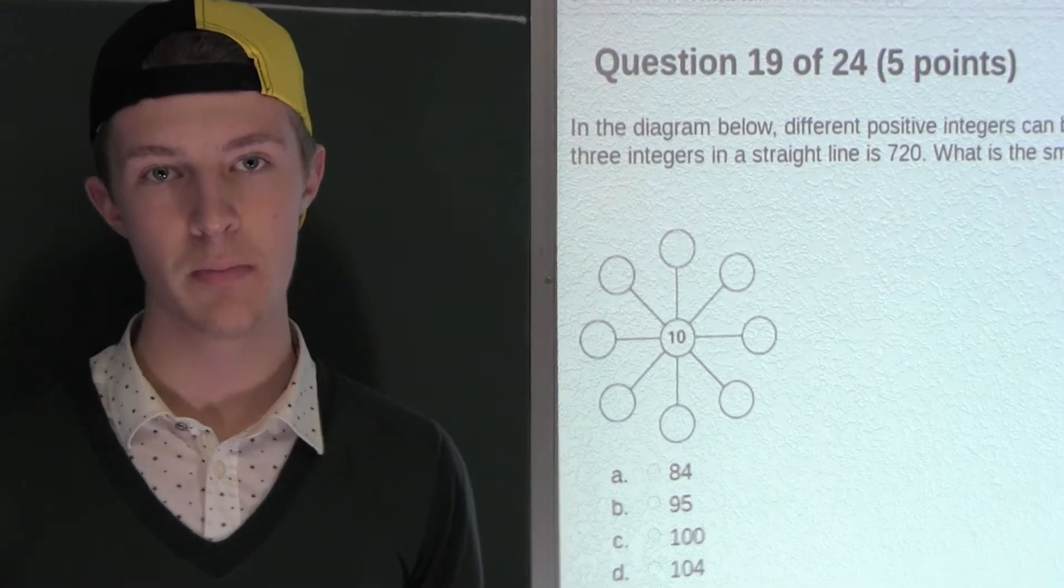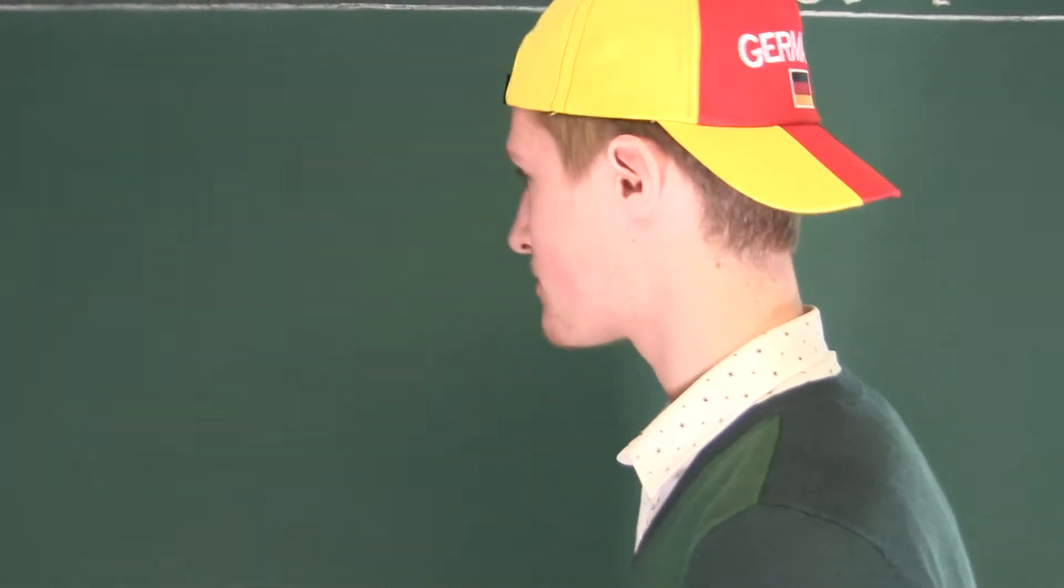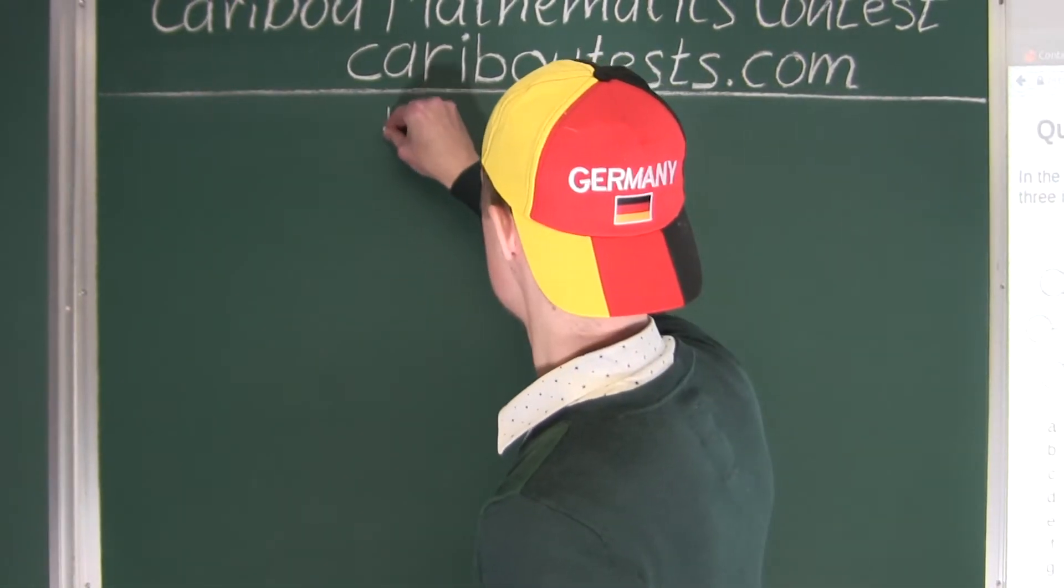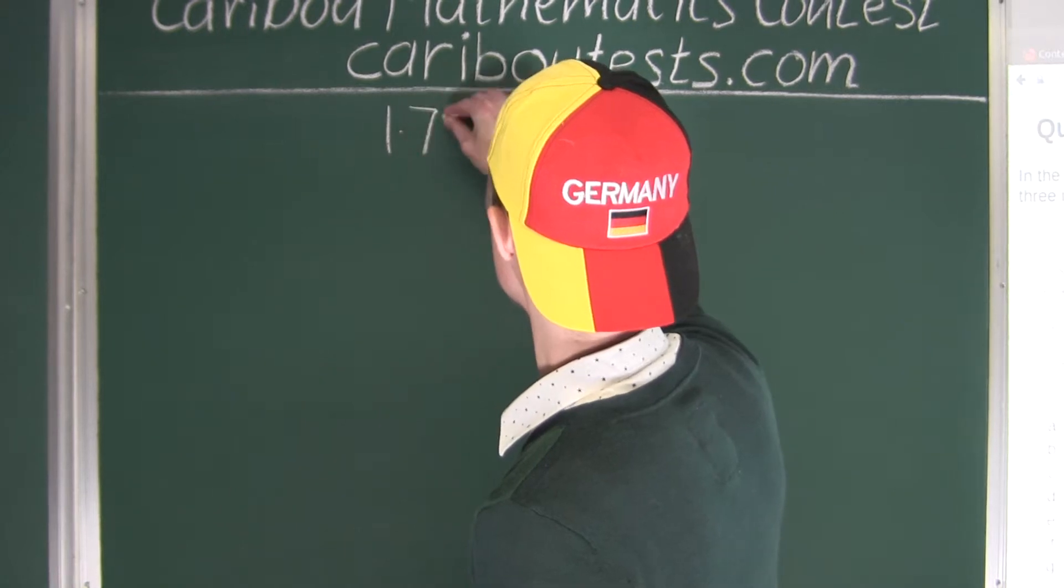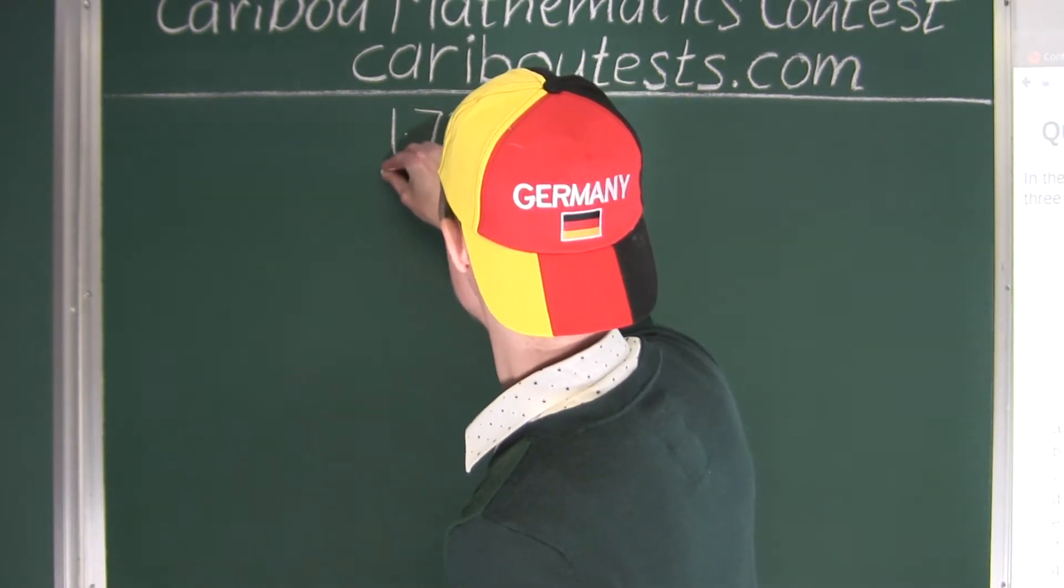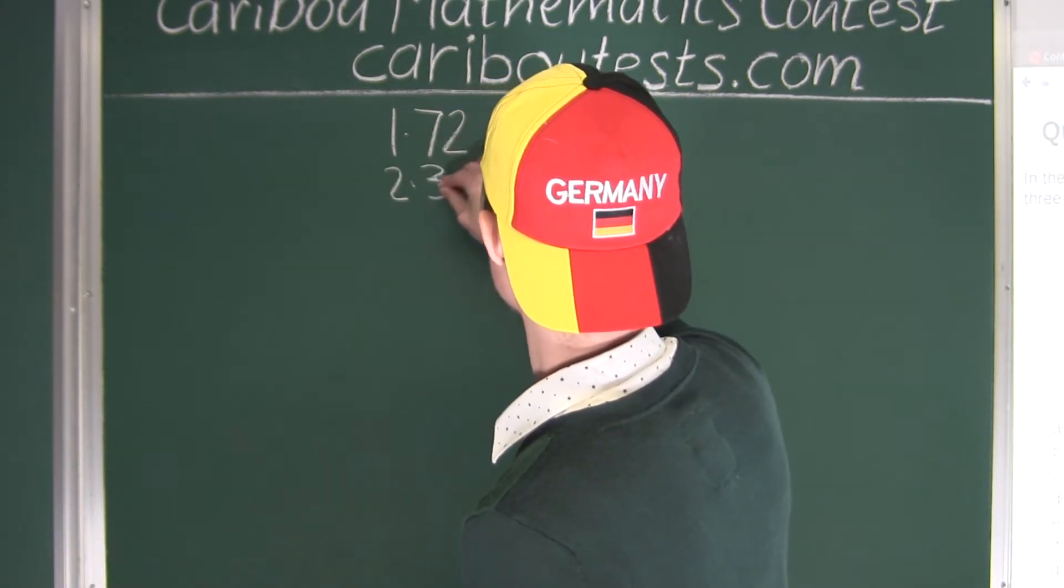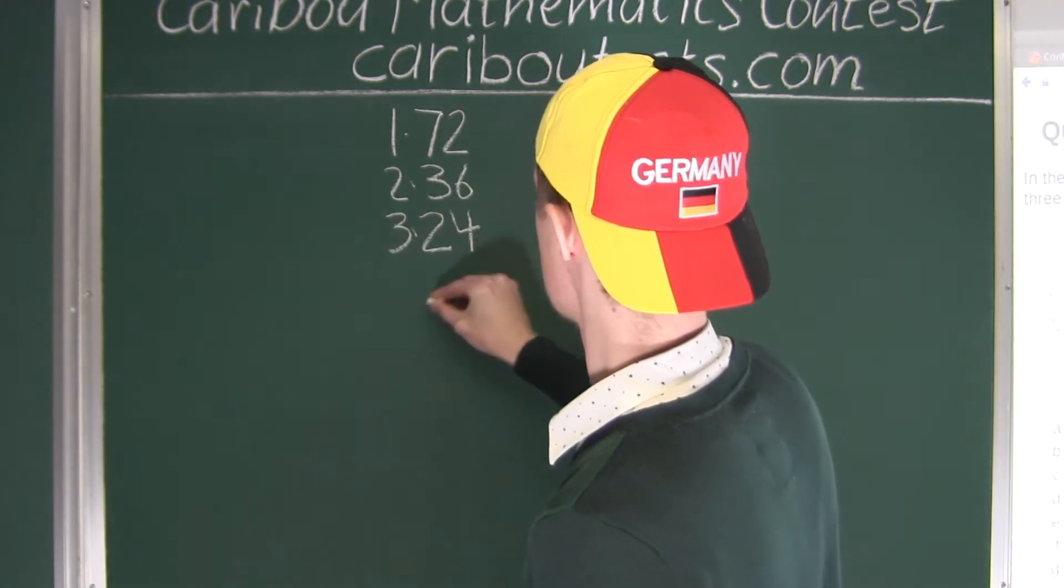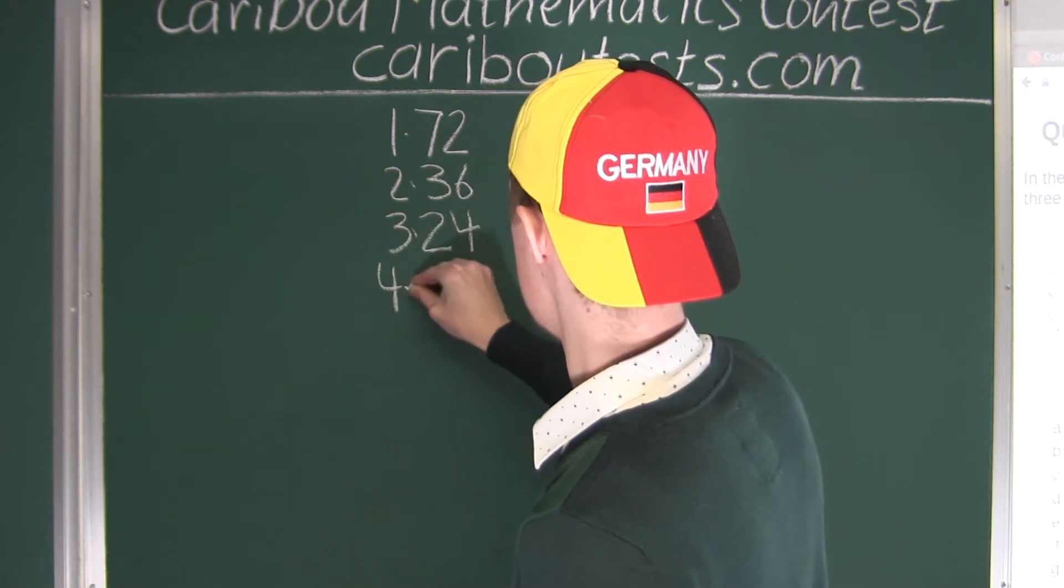So now let's find all pairs of positive integers that have a product of 72. We'll start with 1 and 72, and then 2 and 36, 3 and 24, 4 and 18.